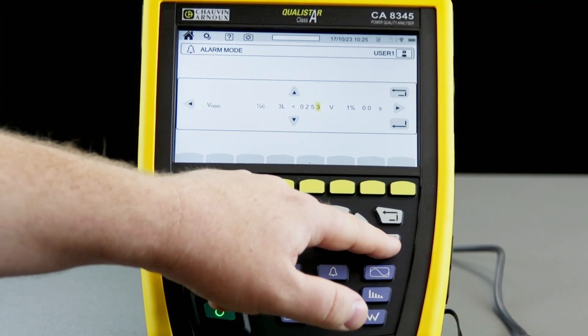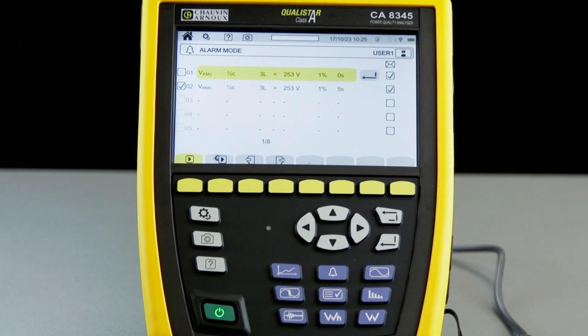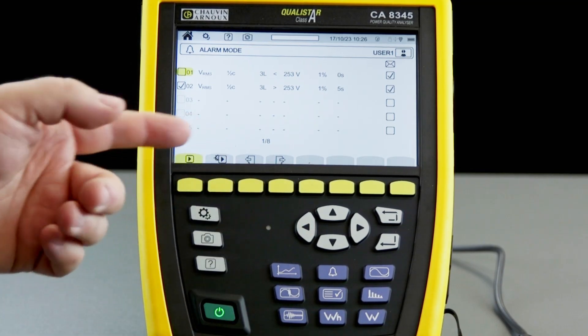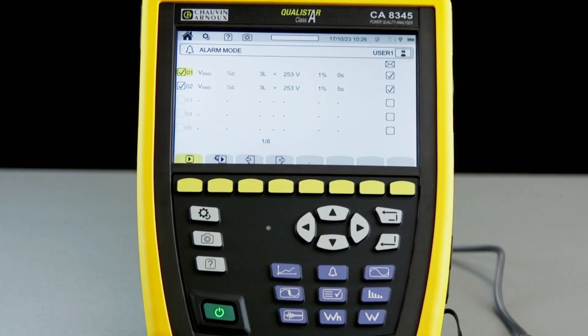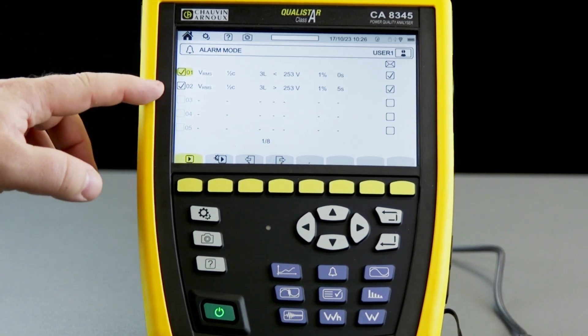Once we've set that up, we can accept those conditions and see the parameters are configured. What we then need to do is select the parameters or alarms we want to monitor. If we don't select them, they won't be monitored during the logging session.